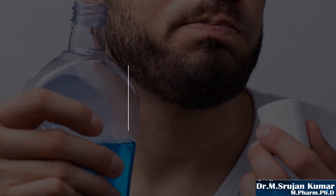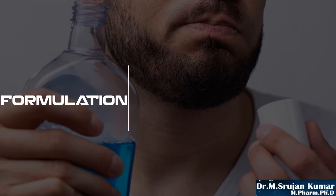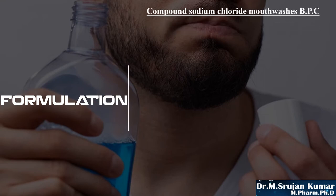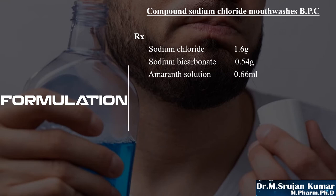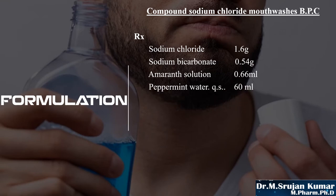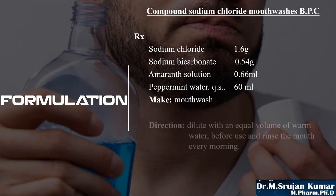Moving on to the important aspect of mouthwashes: formulation. We have taken an example here — compound sodium chloride mouthwash BPC. The RX: sodium chloride 1.6 g, sodium bicarbonate 0.54 g, amaranth solution 0.66 ml, peppermint water quantity sufficient to produce 60 ml. Make mouthwash.